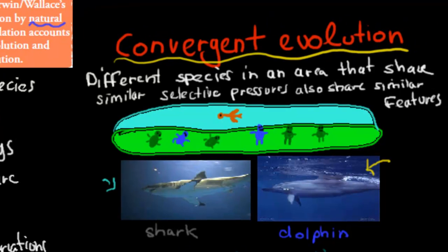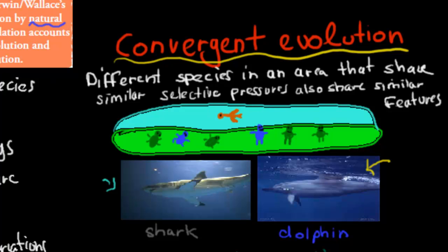The environment selects the ones which are best adapted; those have offspring and eventually dominate. Now we need to talk about convergent and divergent evolution. Convergent evolution: different species in an area that share similar selective pressures also share similar features. The selective pressure is the thing that is dangerous — it could be a predator, lack of food — the thing that kills them.